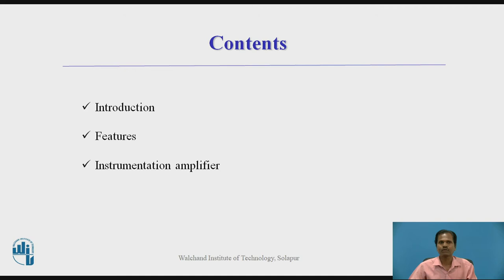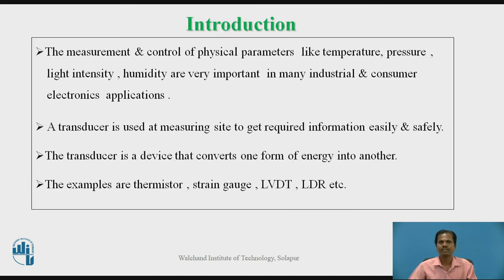These are the contents of my today's presentation. The measurement and control of physical parameters like temperature, pressure, light intensity, and humidity are very important in many industrial and consumer electronics applications. A device known as a transducer is used at the measuring site to get the required information easily and safely. The transducer is a device that converts one form of physical energy into another form.